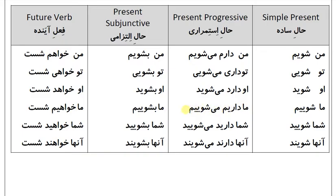شما دارید می‌شویید، آن‌ها دارند می‌شویند. حال التزامی (Present subjunctive): من بشویم، تو بشویی، او بشوید، ما بشوییم، شما بشویید، آن‌ها بشویند.